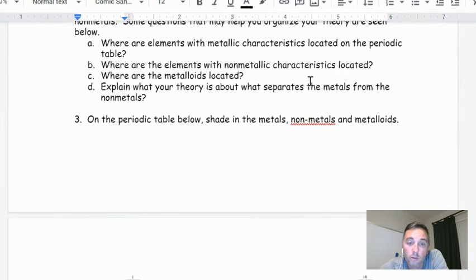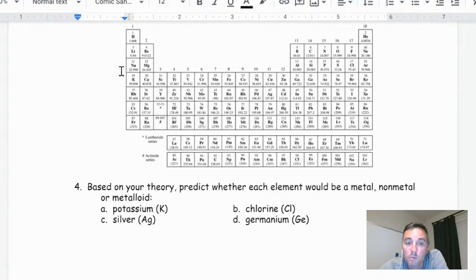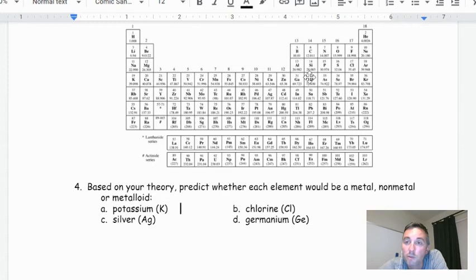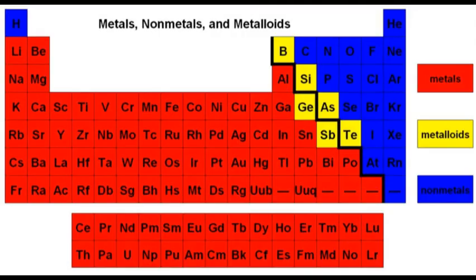Our main metalloids are silicon, germanium, arsenic, antimony, and tellurium — most of the time I focus on silicon or germanium. The rest is non-metal territory. You have to be careful though — hydrogen is one non-metal that's out of place, sitting over on the left with the metals, and we'll get into why that is. So to check the questions: potassium on the left is a metal, chlorine on the right is a non-metal, silver in the middle is definitely a metal, and germanium next to silicon is a metalloid. That takes us through the first trend: metals on the left, non-metals on the right, metalloids along the staircase.